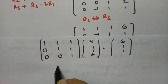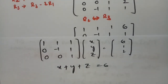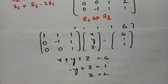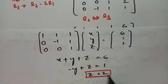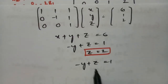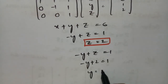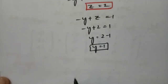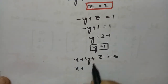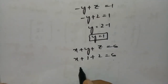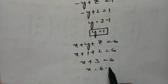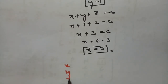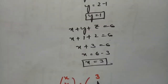From the equations: x + y + z = 6, -y + z = 1, and z = 2. So z = 2 directly. Substituting z = 2 into -y + z = 1 gives -y + 2 = 1, so y = 1. Substituting y = 1 and z = 2 into x + y + z = 6 gives x + 1 + 2 = 6, so x + 3 = 6 and x = 3.